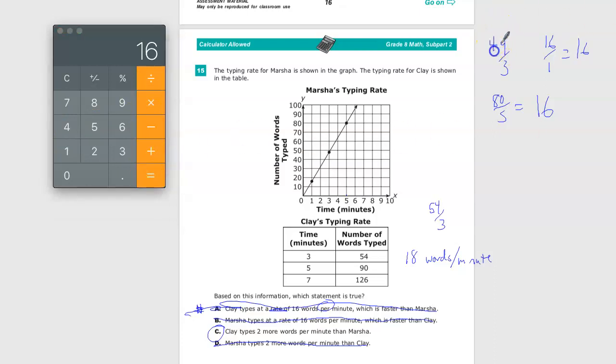So if I think this is 48, which is reasonable, see it's right here. So it's below the line and these are so tightly packed that I could say she... So this is Clay, 18, Marsha 16. And last time I checked, 18 is two more than 16. So Clay types two more words per minute than Marsha.